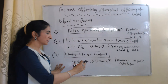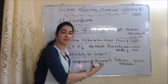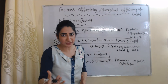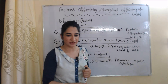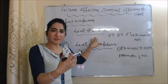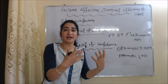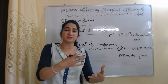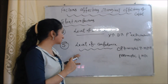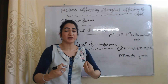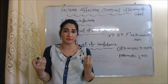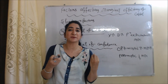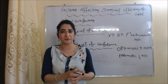Next is propensity to consume: if consumption increases, demand increases, producer expectations about profit increase, and marginal efficiency of capital will also increase. Next is level of income: if income in the economy is increasing, demand increases, producer expectations about profit increase, and MEC increases. Next is level of confidence: if producers are optimistic, their expectation about profit is high and MEC is high; if they are pessimistic, their expectation about profit is low and MEC is also low.